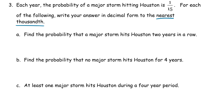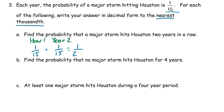For part A, find the probability that a major storm hits Houston two years in a row. For year one, the probability of a major storm hitting is 1 out of 15. For year two it would still be 1 out of 15, and we just multiply those because we want both to happen. So we get 1 over 225, or approximately 0.004 when rounded to the nearest thousandth.